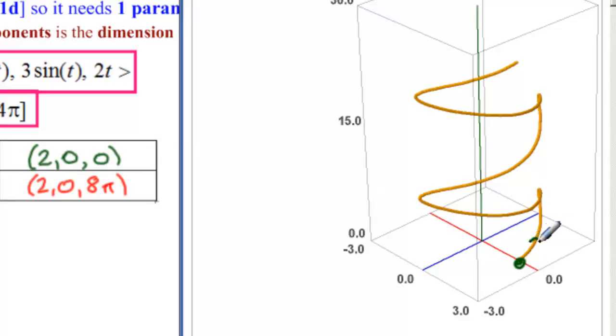And then we're coming up this way if we need our curve to tell us its orientation. Up this way and our end point is at the same x and y coordinate, (2, 0). But now the z coordinate is up in space at 8π.